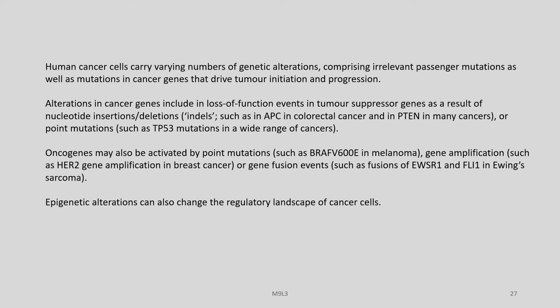Alterations in cancer genes include loss-of-function events in tumour suppressor genes as a result of nucleotide insertions and deletions — indels such as in APC in colorectal cancer and in PTEN in many cancers — or point mutations such as TP53 mutations in a wide range of cancers. Oncogenes may also be activated by point mutations such as BRAF V600E in melanoma, gene amplification such as HER2 in breast cancer, or gene fusions such as EWS-R1 and FLI1 in Ewing sarcoma.